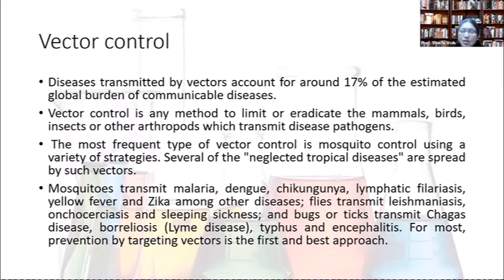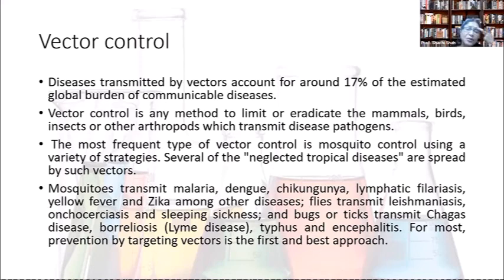Vector control is any method to limit or eradicate mammals, birds, insects, or other arthropods that transmit disease pathogens. Diseases transmitted by vectors account for about 70 percent of the estimated global burden of communicable diseases. The most frequent type of vector control to be discussed is mosquito control.